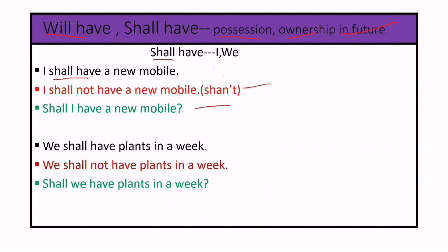Negative sentence: 'I shall not have a new mobile.' Interrogative sentence: 'Shall I have a new mobile?' Here, shall is the helping verb. In interrogative and negative sentence forms, the helping verb is used — shall is placed before the subject to form a question.